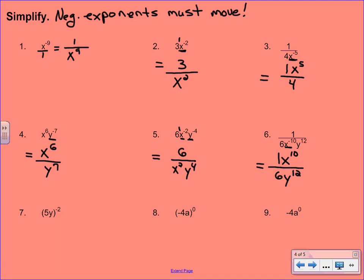Number 7 has this exponent on the outside, so the first thing we're going to do is distribute it to both of our bases. We get 5 to the negative 2nd, y to the negative 2nd. Now both of our bases have negative exponents, so they're both going to move. To keep the place, because if they move to the denominator I have to have something in the numerator, we just put a 1 in there. We end up with 5 to the 2nd on the bottom and y to the 2nd. Then we just evaluate, so it's 1 over 25 y to the 2nd.